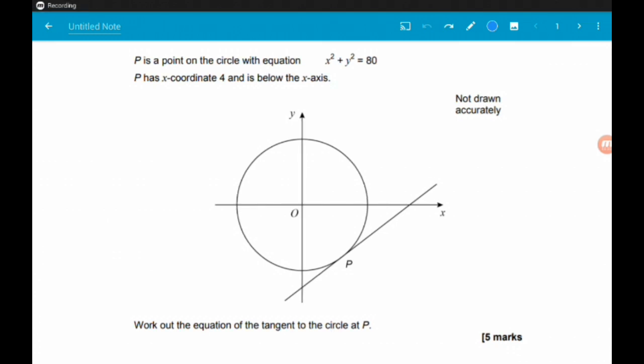The question says P is a point on the circle with equation x squared plus y squared is equal to 80. From that, we should know then that the centre of the circle is 0, 0, the origin, which is going to be useful. P has x-coordinate 4 and is below the x-axis. Our mission is to find the equation of the tangent to the circle at point P. I know these questions are quite daunting. First of all, let's label anything that we can.